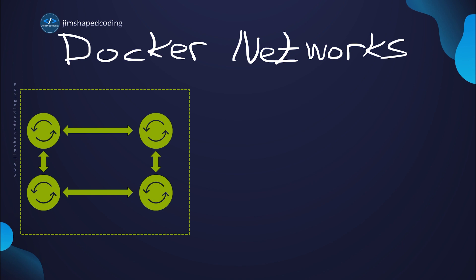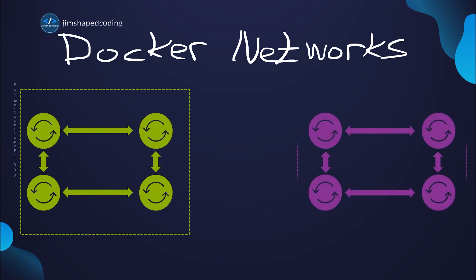We could configure networks in a way that we separate the connection between them. You could create a group of four containers in one network and another four containers in another network. Basically, you could prevent green containers from accessing purple containers, which is good for security reasons. It also helps for comfort — when looking at a bunch of running containers, checking which network interface they are on gives you an indication about what containers should communicate and how they are related. So now we are going to see how to create a new network.